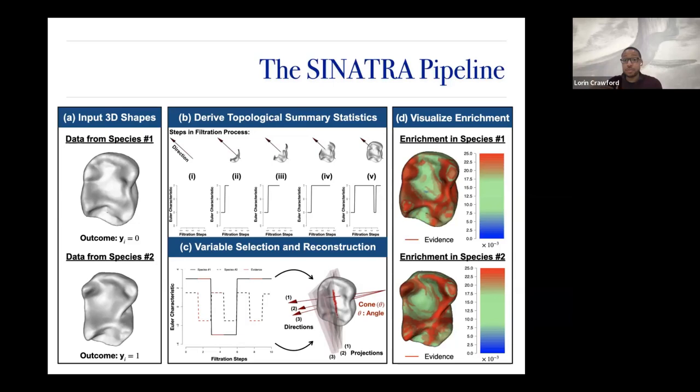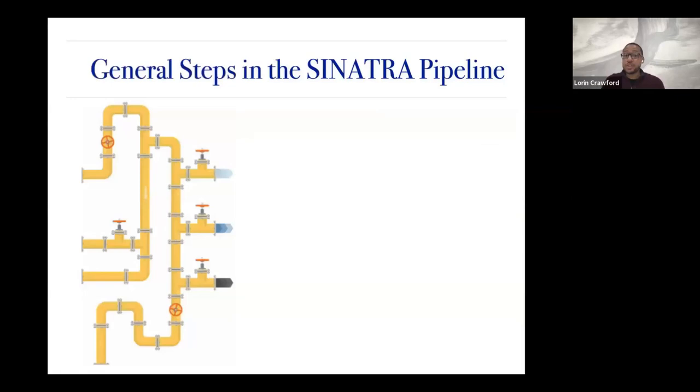The key part about the Euler characteristic is that you can actually go from Euler characteristic back to shape when you have access to the original shape. You take the significant pieces of the differences between these curves and project them back onto the actual image. This allows you to visualize on the 3D surface the differences that describe the variation between the two groups — highlighting the actual morphological features that differentiate species one and species two.